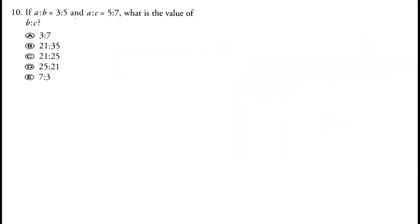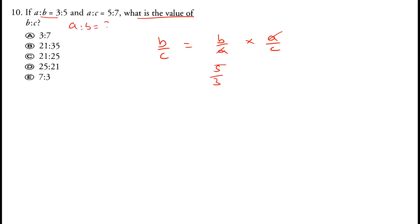Given a to b is 3 by 5 and a to c is 5 by 7, find b to c. We write b over c as b over a multiplied by a over c. Since a to b is 3 to 5, b to a is 5 over 3. Multiplying 5 over 3 by 5 over 7, we get b to c equals 25 over 21. Option D is correct.